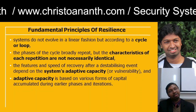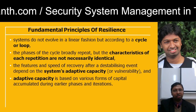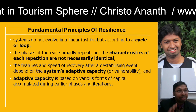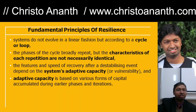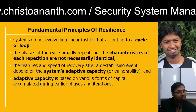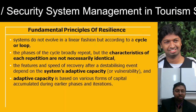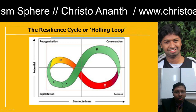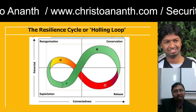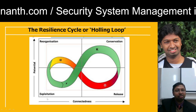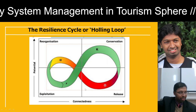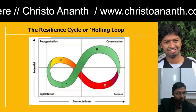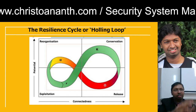Systems do not always evolve in a linear fashion but can fall into a particular cycle or loop — these are the fundamental principles of resilience. Repetitions in the process need not be similar at all. It depends on the system's adaptive capacity or the system's vulnerability. Adaptive capacity is based on the capital accumulated during each phase, stage, step, or iteration. This is the resilience cycle — also called the Holling loop — which includes reorganization, conservation, release, and exploitation, with connectedness throughout the loop carrying it forward.